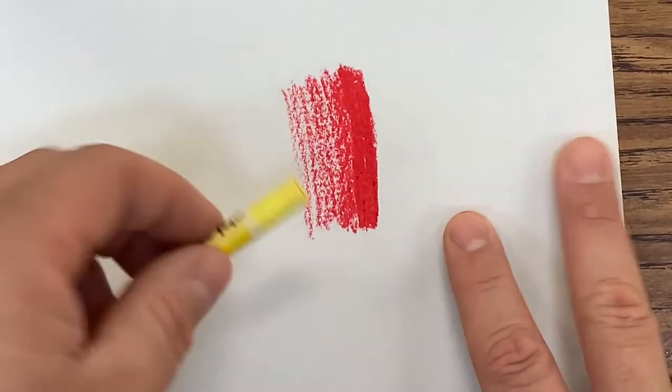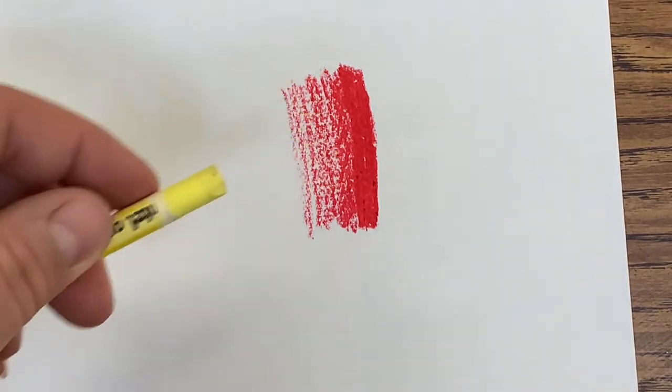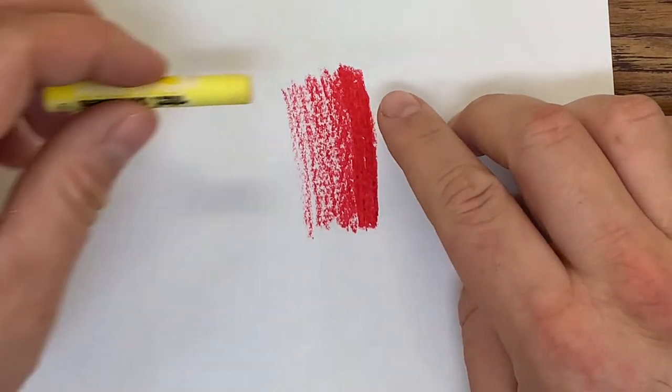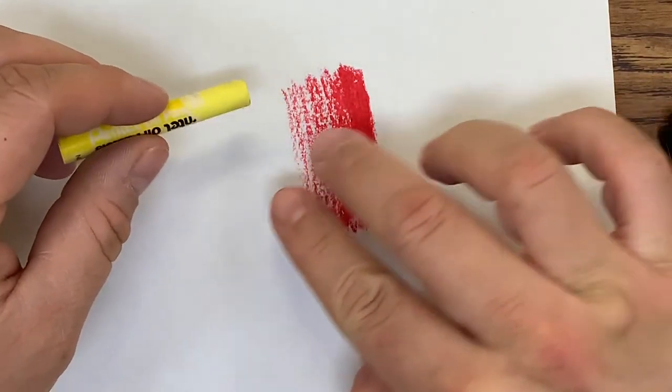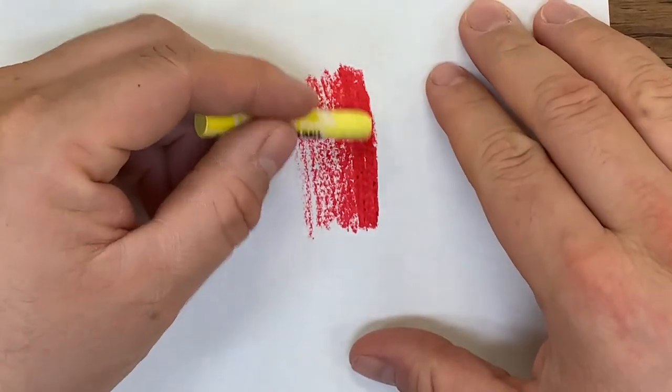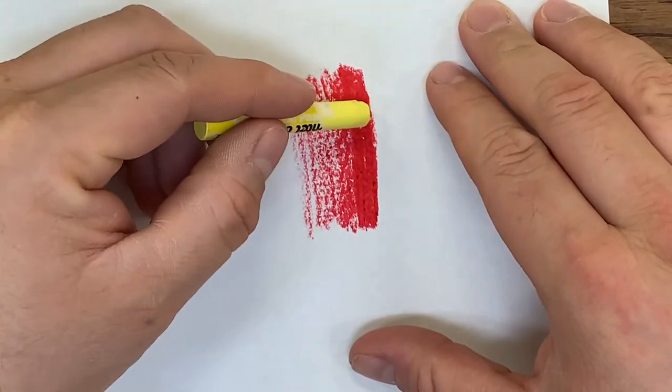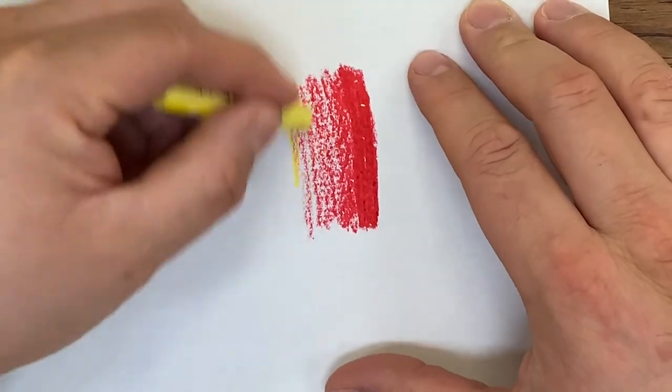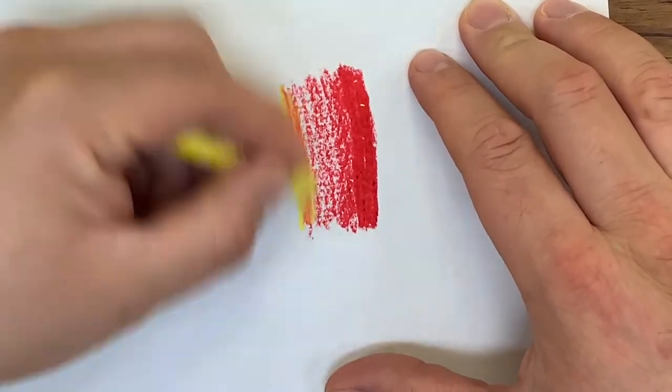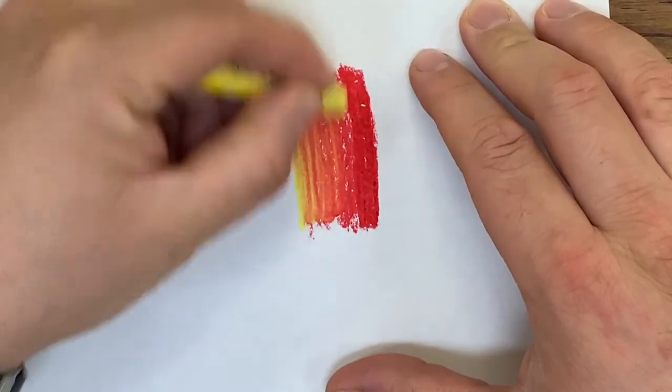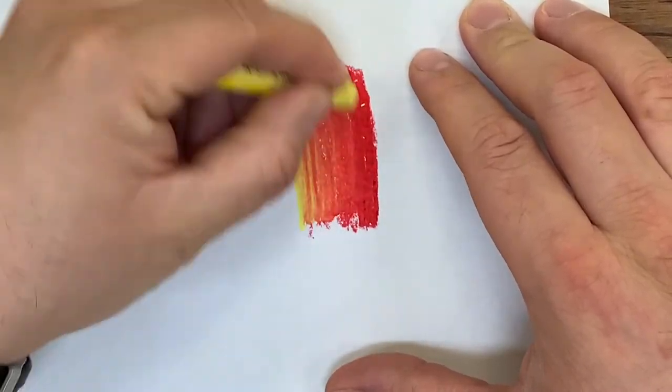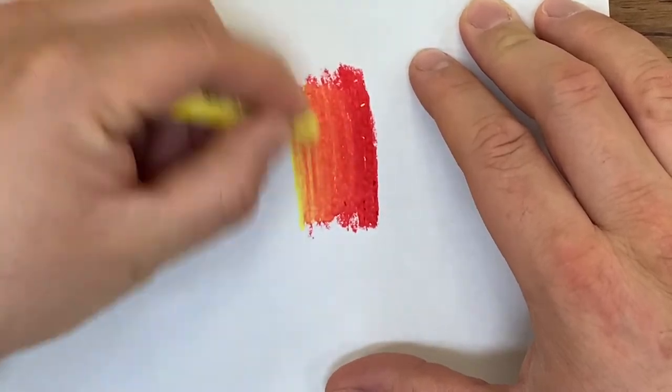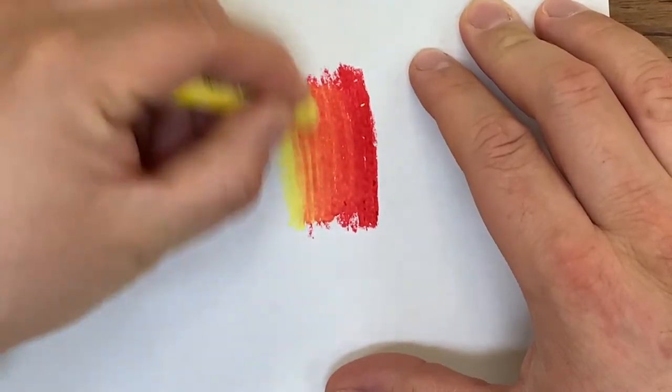You would come in with your next color and then you would use a lighter color to blend into the dark color. So you use the yellow to kind of blend into the red, right?